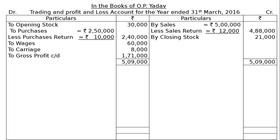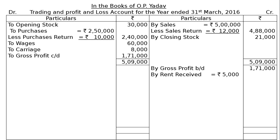This carried down will be brought down to the next ledger, that is the profit and loss account — the second half. In continuation, by gross profit brought down Rs. 1 lakh 71,000. Next, find out all incomes on the credit side — the first one being rent received Rs. 5,000.